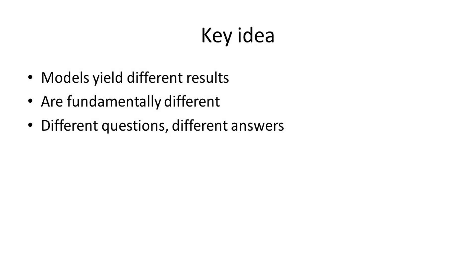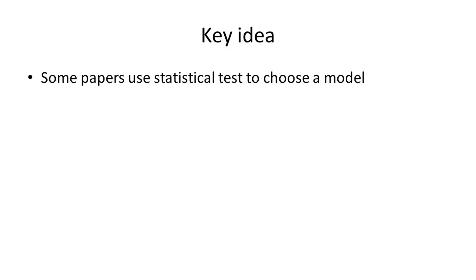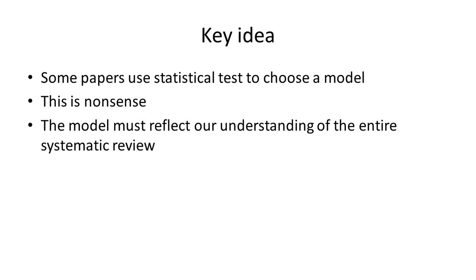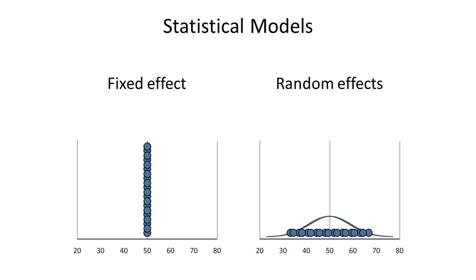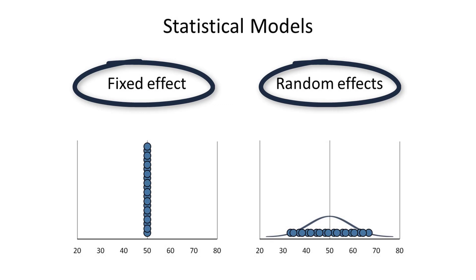The second point is this: many papers that report meta-analysis results say they started out without knowing which model to use, then ran a test for heterogeneity and used this test to select a model. While this is a very common approach in some fields, it generally makes no sense. The choice of a model must reflect the goals of the systematic review — goals that we set in advance based on what we're planning to do. I've sketched the two models here: the fixed effect model on the left and the random effects model on the right. Let me start by running through an example of each.